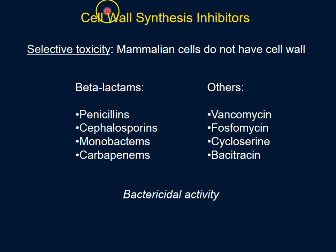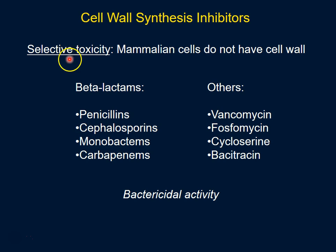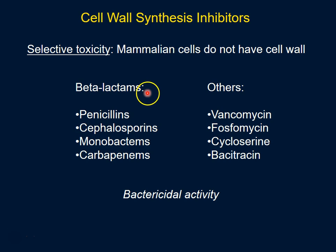There are a large number of antibiotics that actually work by inhibiting the synthesis of the cell wall. These inhibitors are selectively toxic to bacteria because mammalian cells don't have a cell wall.